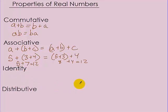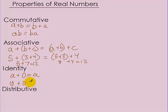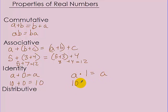The identity property has two forms. The addition form: A plus 0 equals A — adding zero to something still equals that same thing. For example, 10 plus 0 still equals 10. The multiplication form: A times 1 equals A — if you multiply something by 1, it still comes out to that same thing. So 10 times 1 still equals 10.